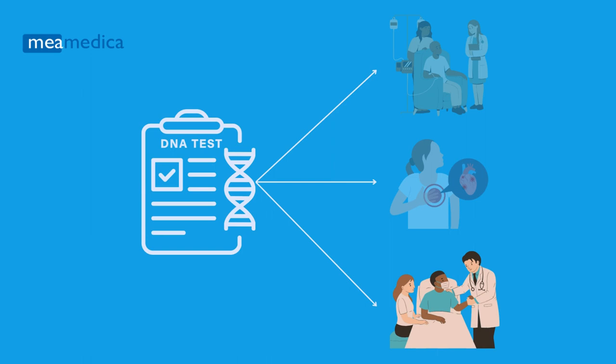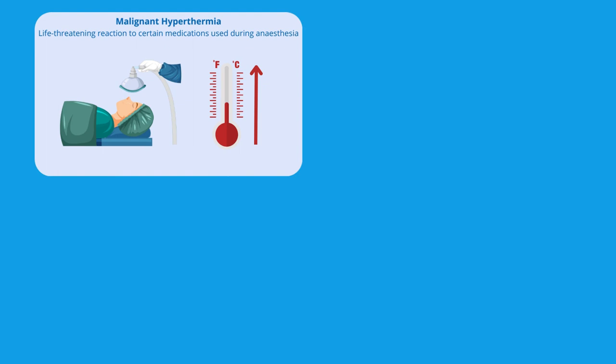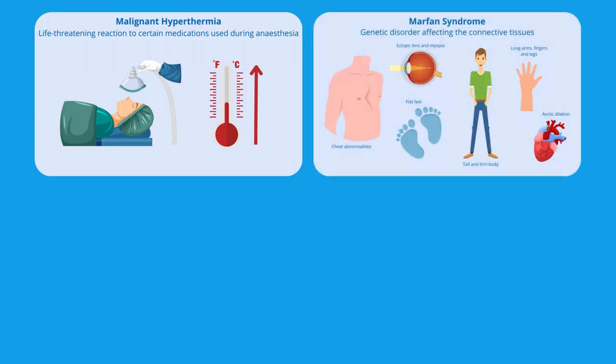In addition to cardiovascular and cancer-related diseases, in this DNA test you can also find out if you have an increased risk of developing other diseases, such as malignant hyperthermia, which is a rare but potentially life-threatening reaction to certain medications used during anesthesia. Identifying an increased risk is crucial to prevent triggering this reaction during surgery. Marfan syndrome, which is a genetic disorder affecting the connective tissues, primarily in the heart, eyes, and skeletal system — early detection is crucial for managing potential cardiovascular complications.